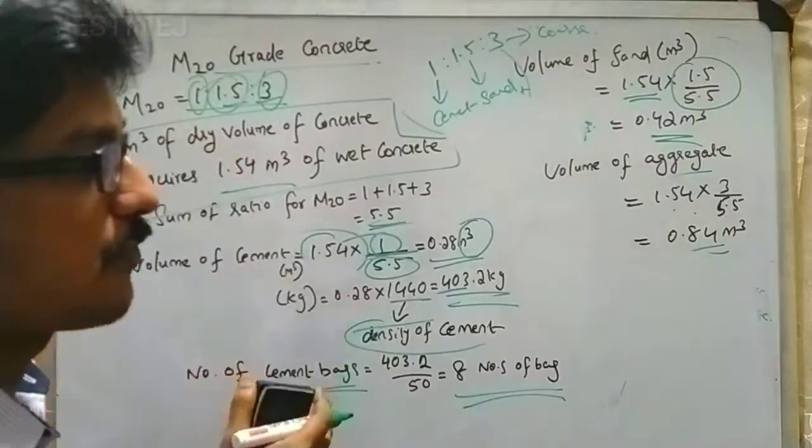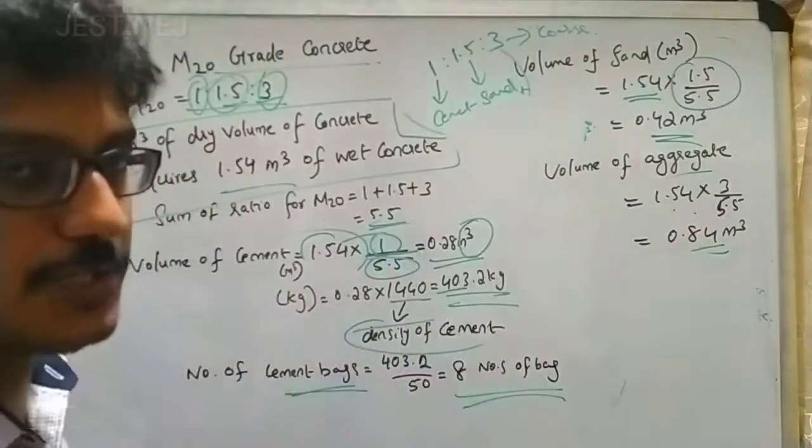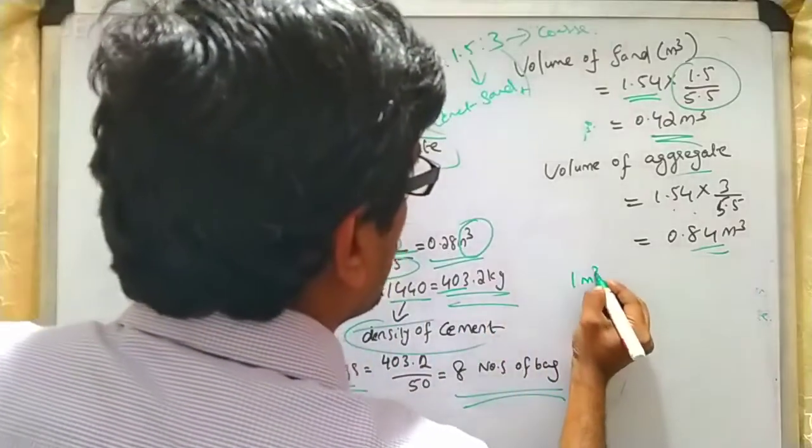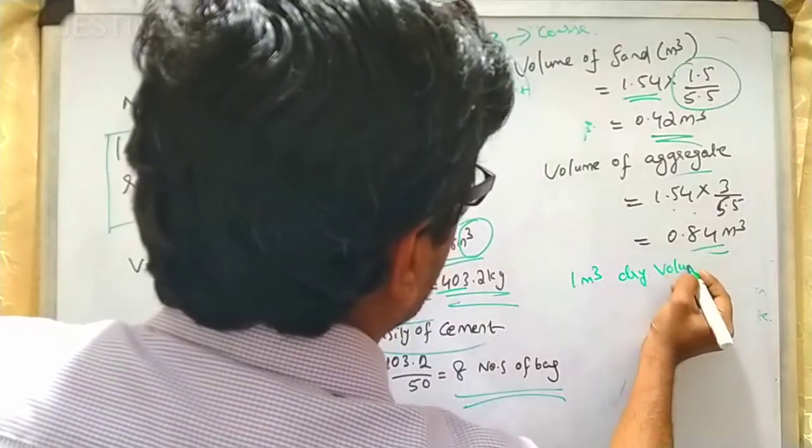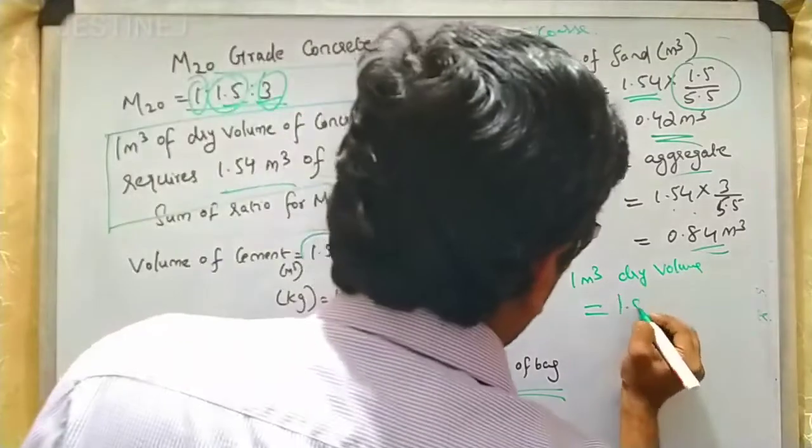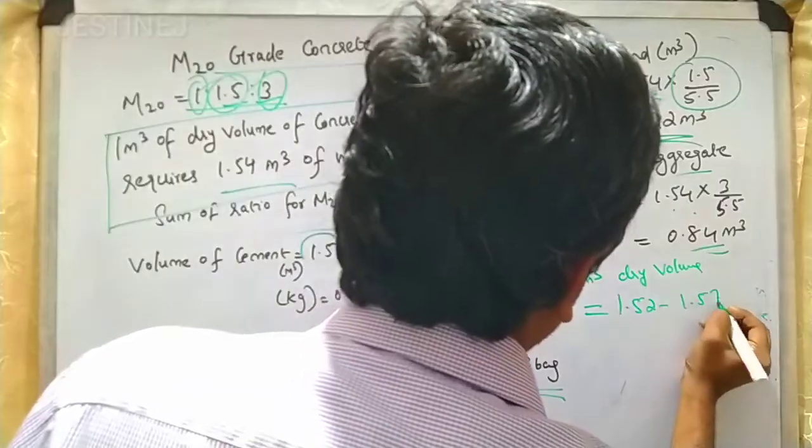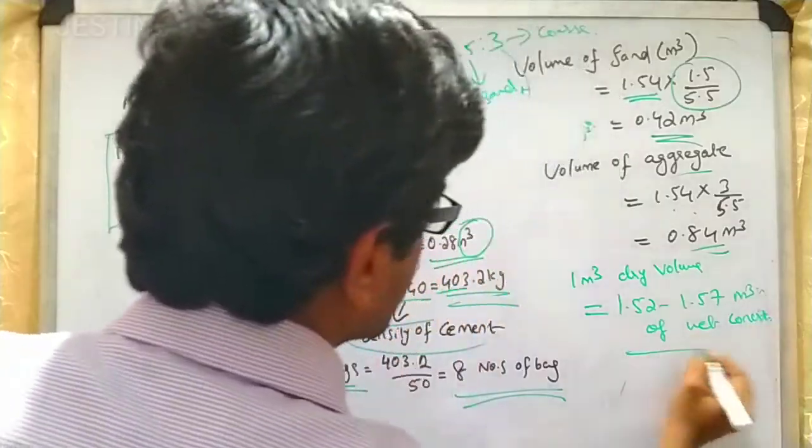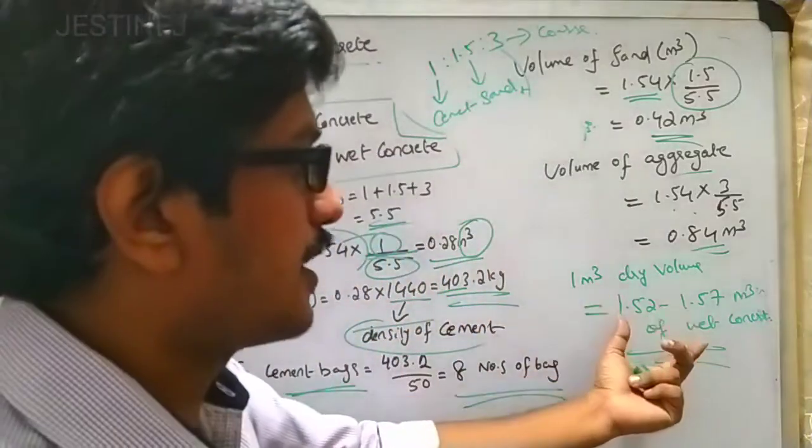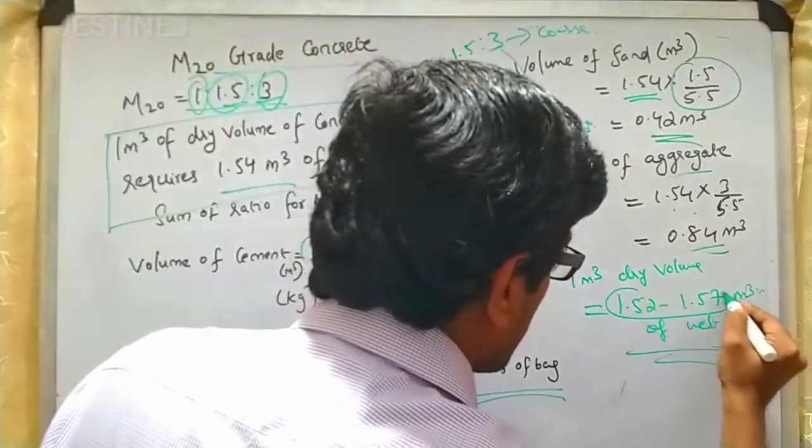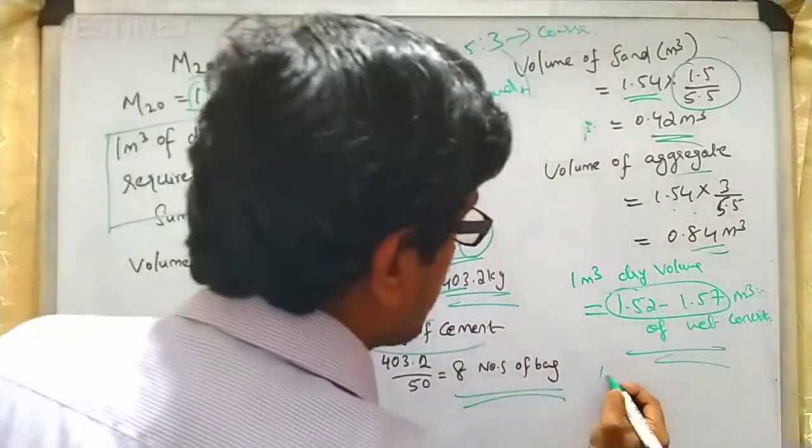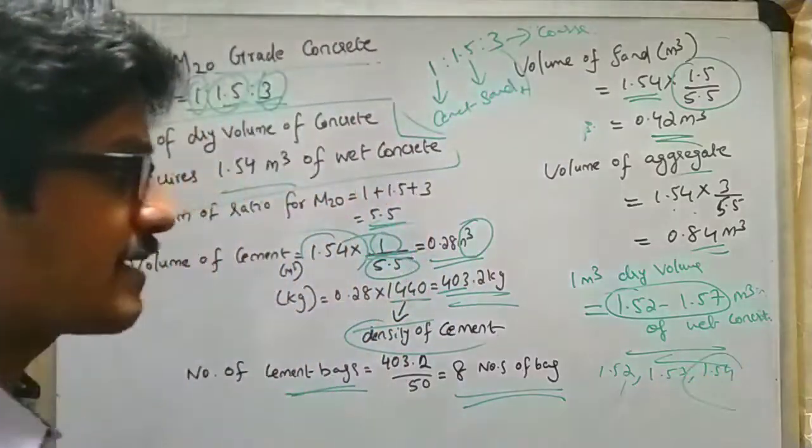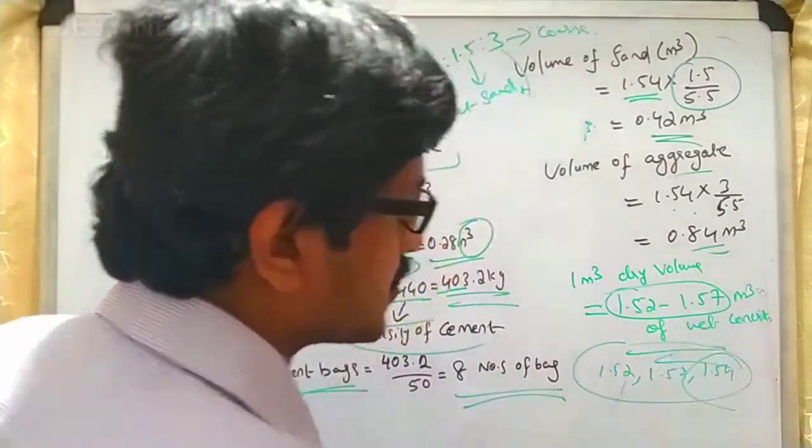For M10 and M15, different ratios are used. Here there is a condition: if 1 cubic meter of dry volume of concrete, it will equal 1.52 to 1.57 cubic meters of wet concrete volume. This condition has been shown experimentally. In some textbooks they are following 1.52, then 1.57, 1.54, and likewise. Different books use different values from this range.